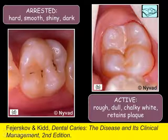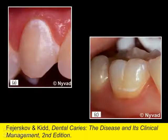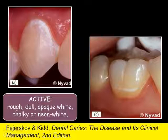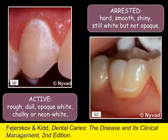Here is another comparison. The lesion on the left is active — if you felt it with an explorer or probe, it would feel rough. The surface looks dull, and the color is opaque white, chalky white, or even neon white; it looks like it's glowing. On the right, we have a very different lesion. It would be hard and smooth if you used a probe or explorer. It is shiny, and still white, but not as opaque — it's translucent and almost blends into the tooth. So this lesion on the right is arrested.